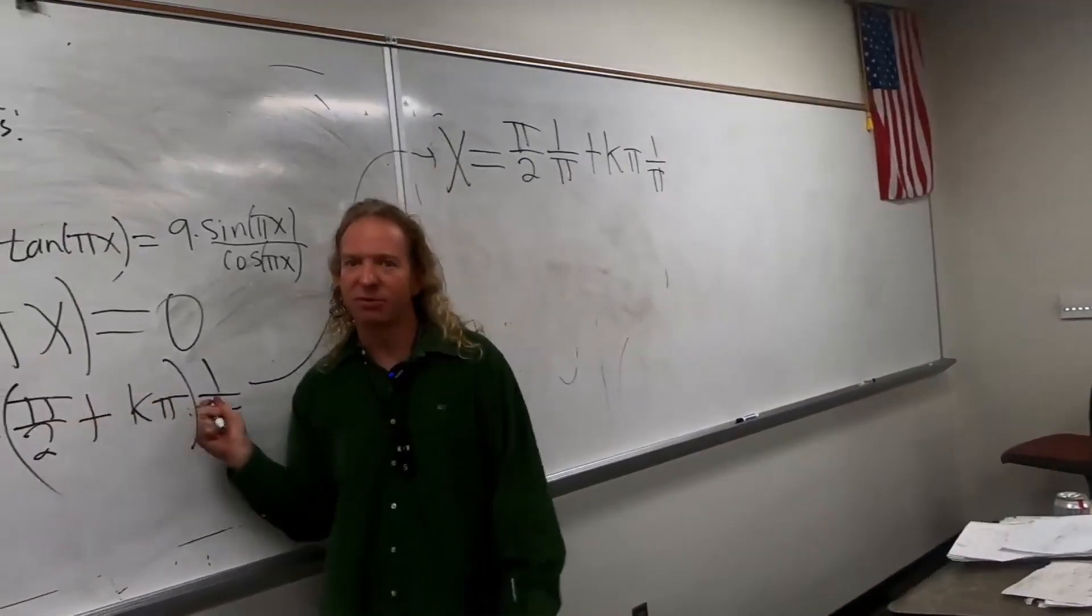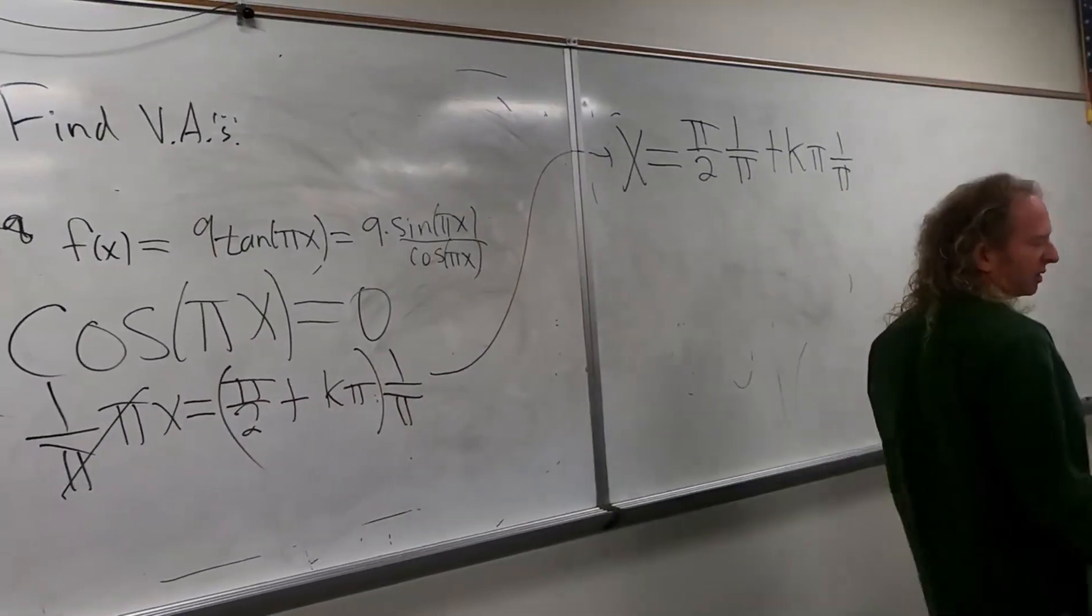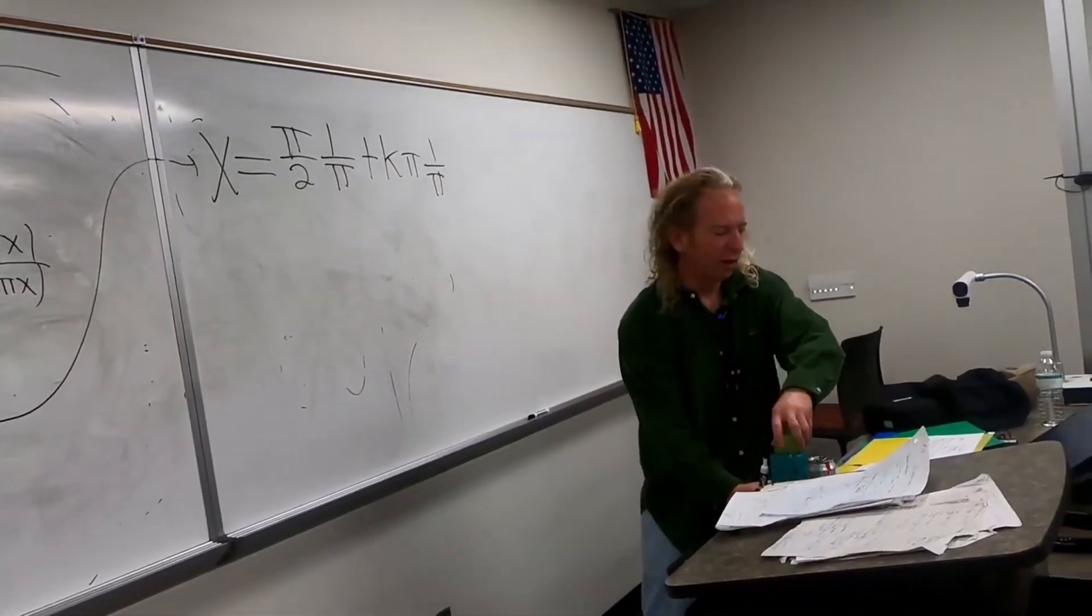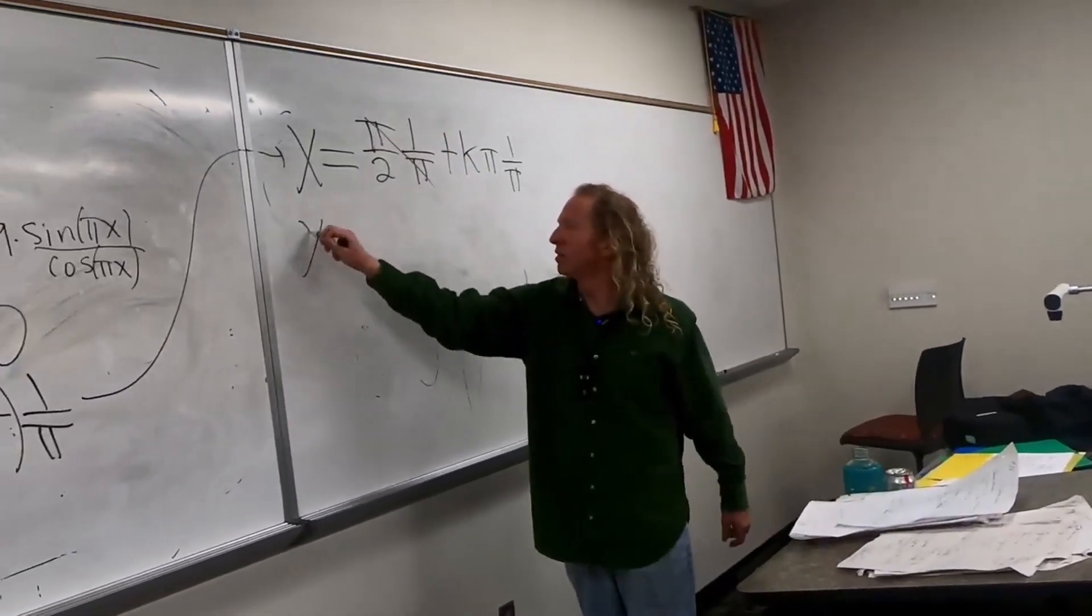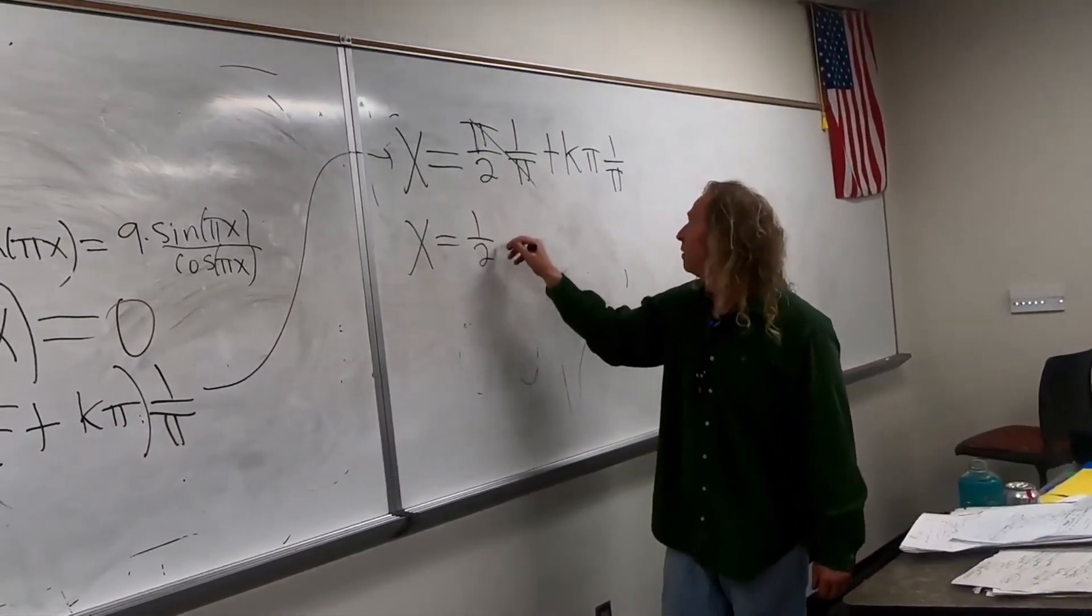You can skip steps, I don't like to. It's easy to mess up. And these cancel. So we get x equals 1 half plus k.